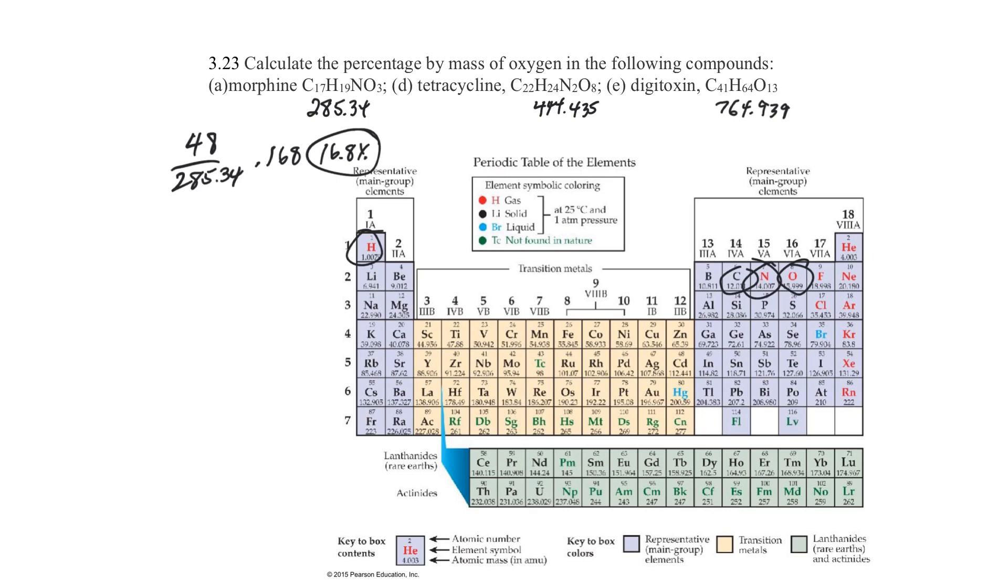Eight and eight is 16, 16 and 16 is 32, that's four. And then 32 twice is 64. So we have 64 out of a total of 444.435. So that's going to be 0.161, which is 16.1%, right?